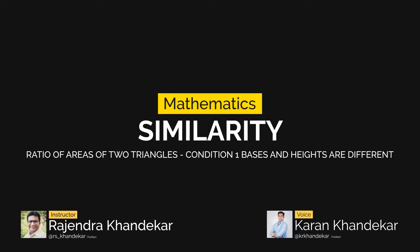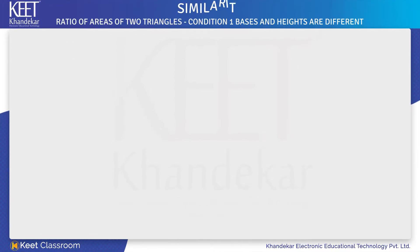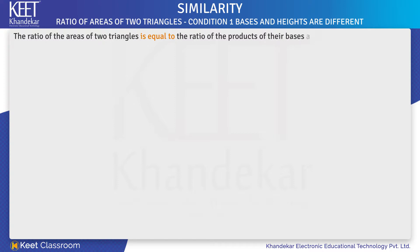In this amazing video, we will learn regarding ratio of areas of two triangles under the first condition — that is, different bases and heights. The statement is: the ratio of areas of two triangles is equal to the ratio of the products of their bases and corresponding heights.